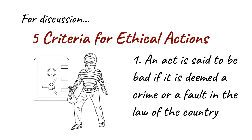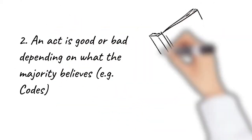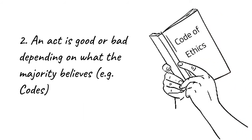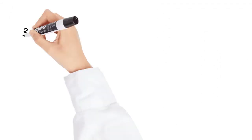For example, plagiarism is unethical. There is no law against it, but there are rules in the university. Second, an act is good or bad depending on what the majority believes. This includes the norms acceptable in society as well as the codes of ethics that each industry discusses and codifies among themselves.